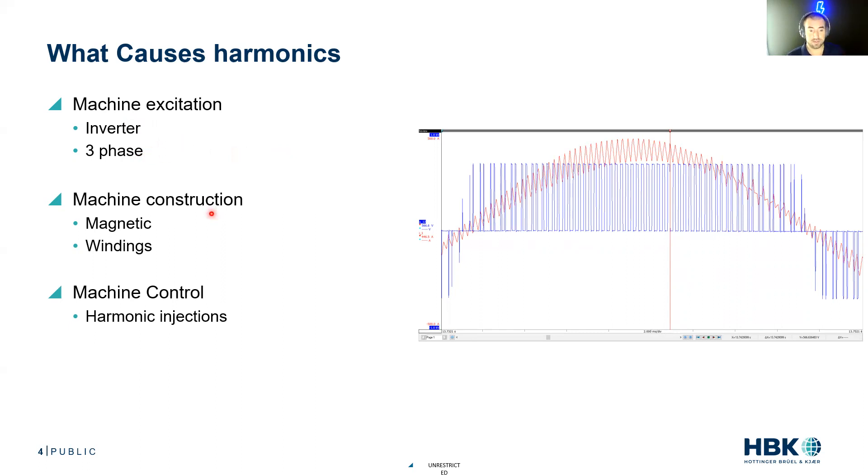We also have machine construction. There's the magnetic construction, which is not going to be perfectly sinusoidal, and anything that's not perfectly sinusoidal is going to cause a harmonic element. And the winding distribution - we can wind the machine to try to even out that harmonic content, but we're never going to do it perfectly because there's no such thing as a perfect sine wave.